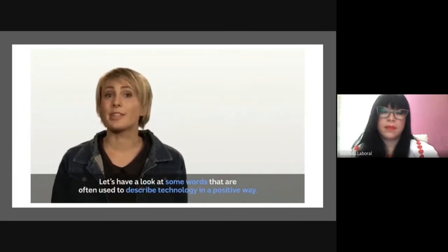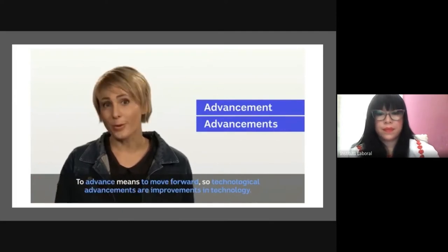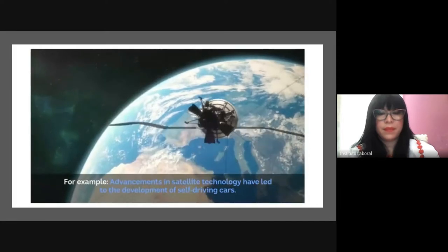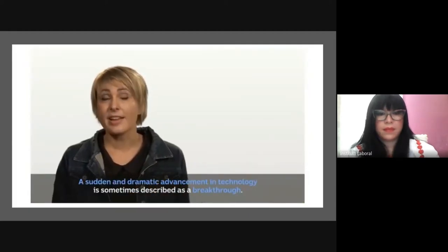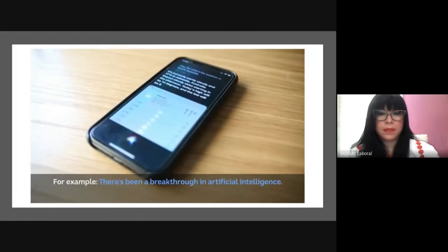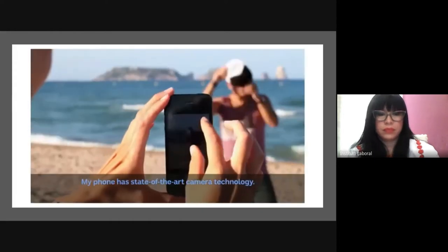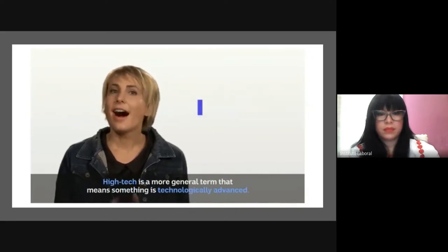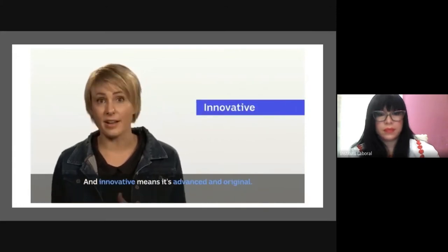Let's look at words often used to describe technology in a positive way. First, there's 'advancement' or 'advancements.' To advance means to move forward, so technological advancements are improvements in technology — for example, advancements in satellite technology have led to self-driving cars. A sudden and dramatic advancement is called a 'breakthrough,' as in 'there's been a breakthrough in artificial intelligence.' 'State-of-the-art' describes technology that is the best of its kind. 'Cutting-edge' means the latest, almost up-to-date technology. 'High-tech' means something is technologically advanced and innovative.